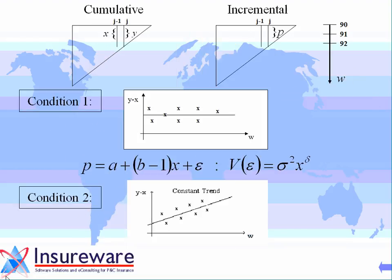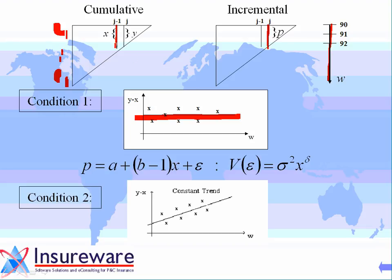For a cumulative array adjusted by exposures, suppose condition one is satisfied — when you graph the incrementals versus accident year they look flat. In that case, when you graph these incrementals versus these cumulatives, there'll be no correlation: the slope of the line will be zero, meaning ratio minus one equals zero and ratios will have no predictive power. If you confine yourself to the ELOF module, you would calculate the average of each column of incrementals but treat each development period as a separate problem, when in fact they're related.